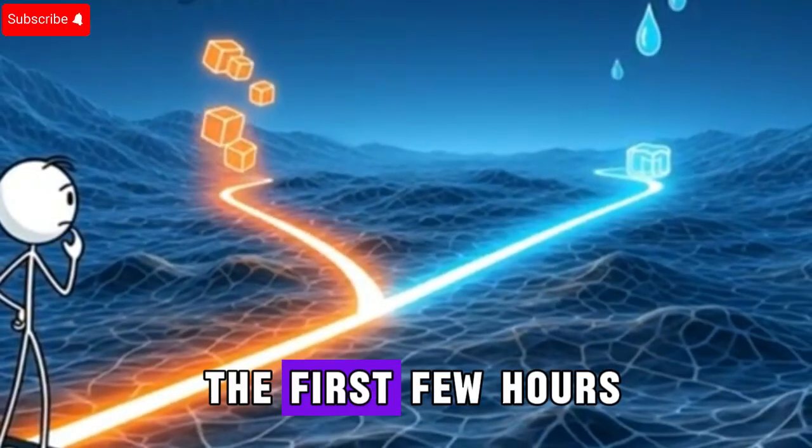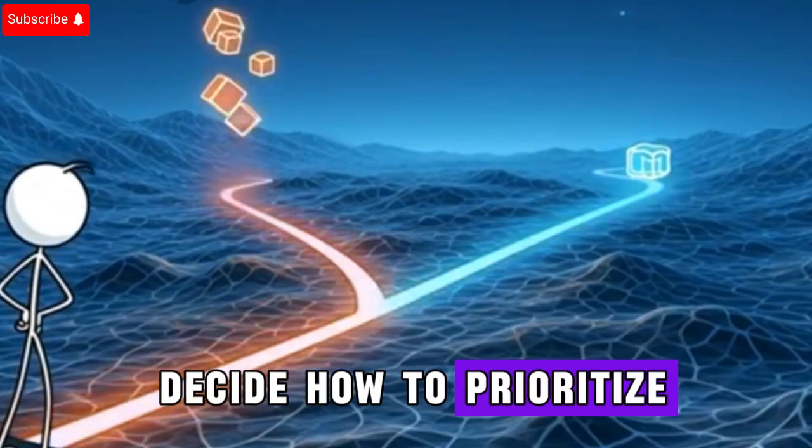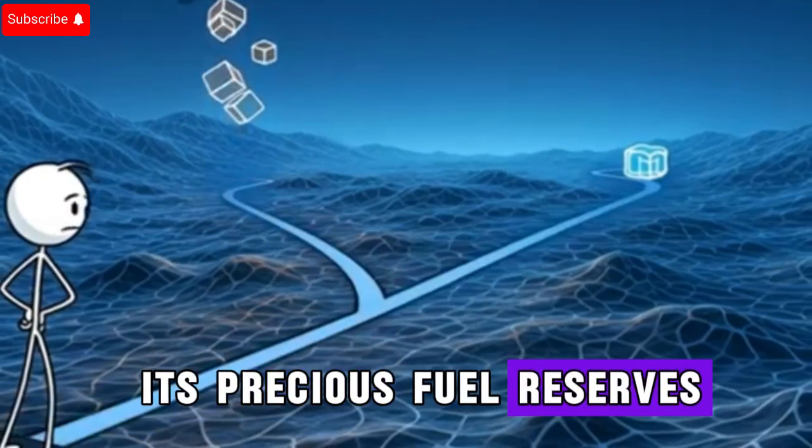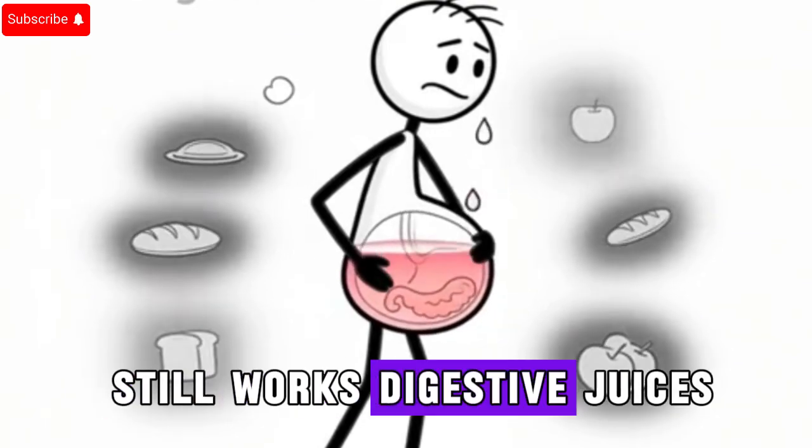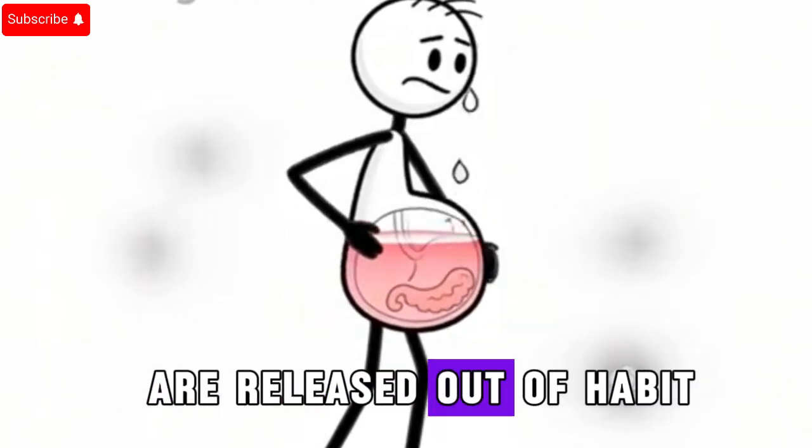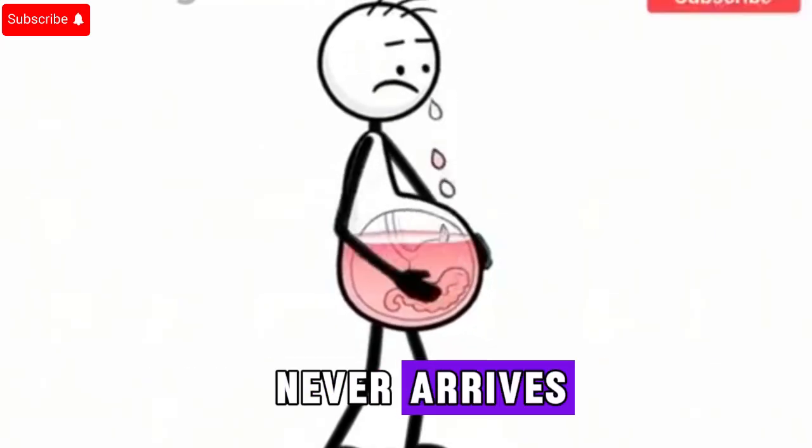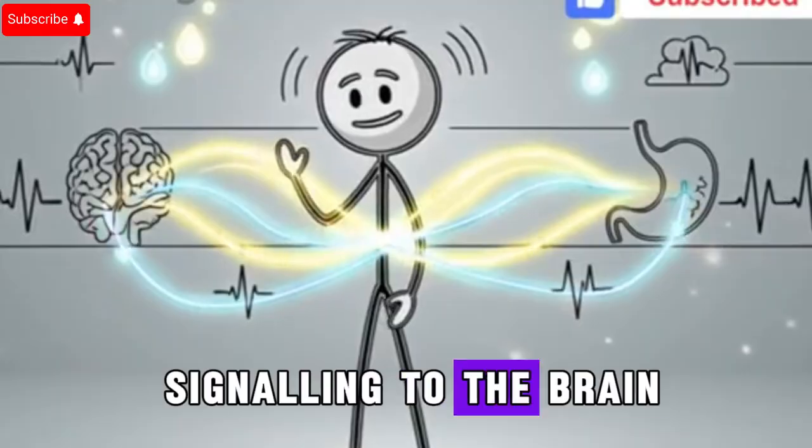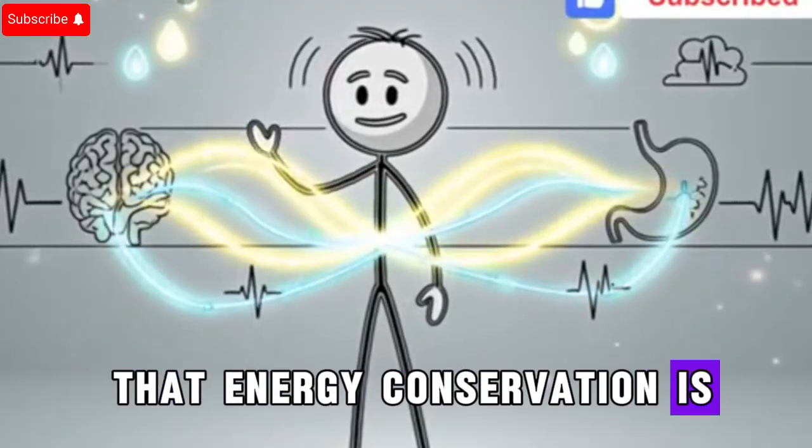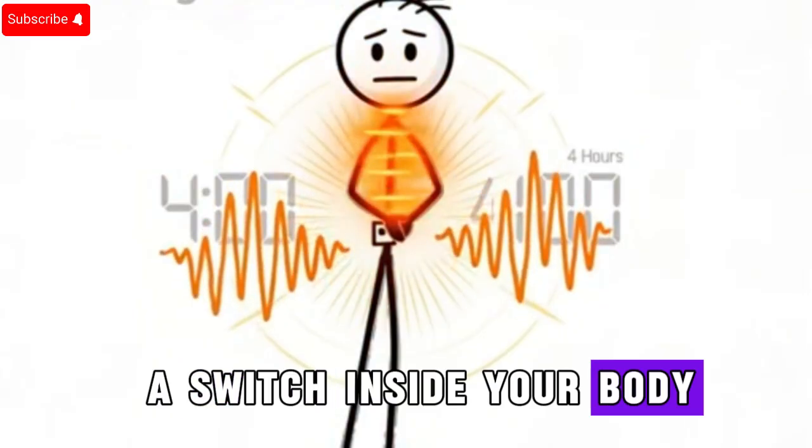The first few hours of fasting are a test. Your body must decide how to prioritize its precious fuel reserves. The stomach, though empty, still works. Digestive juices are released out of habit, almost expecting food that never arrives. Meanwhile, hormones start adjusting, signaling to the brain that energy conservation is now the priority. It's almost like flipping a switch inside your body.